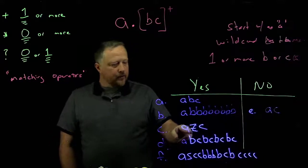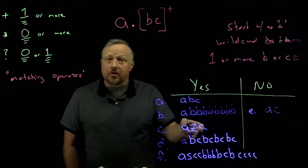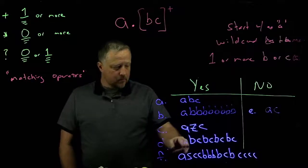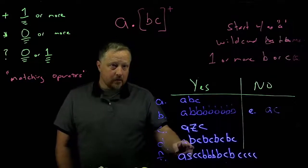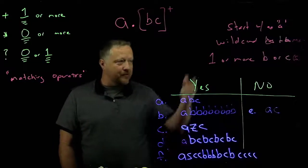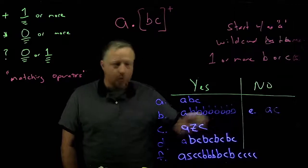Starts with an A. Wild card. One or more Cs. Bs or Cs. Sorry. Yeah. That covers it. Next one. A. Wild card. Then we have our unlimited numbers of Bs and Cs after that. One or more. We took care of that with just that first one, but we had more after that.